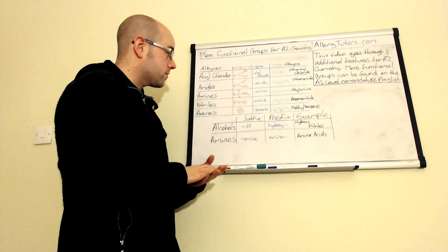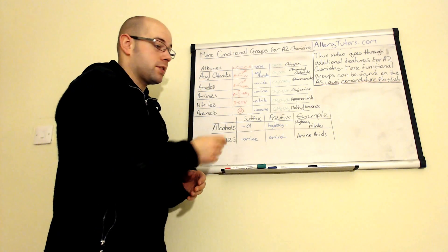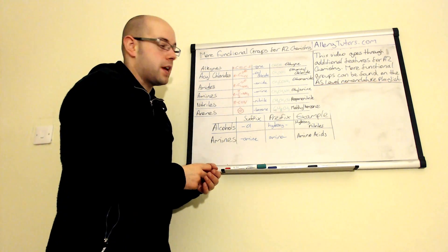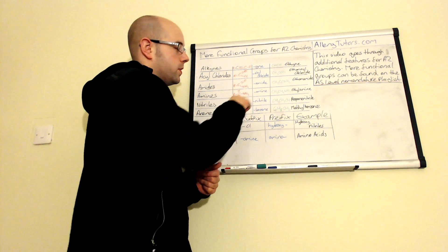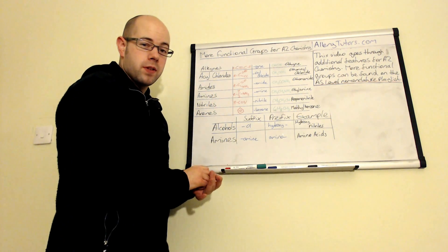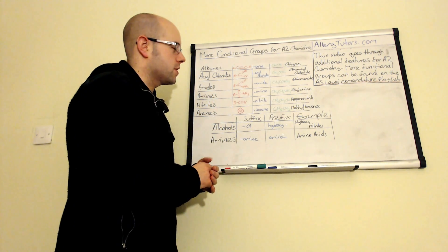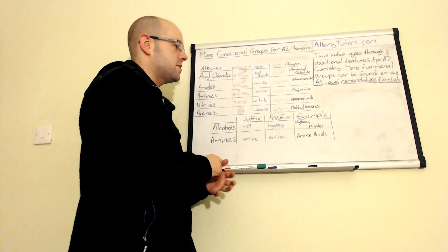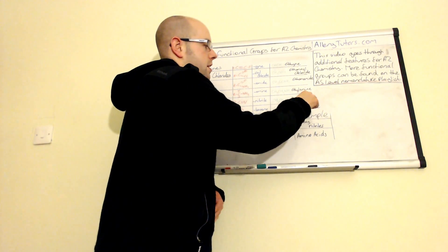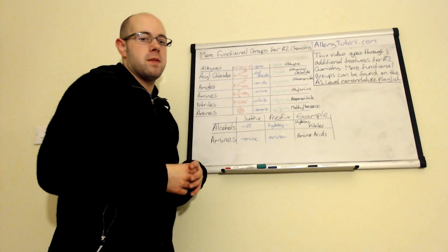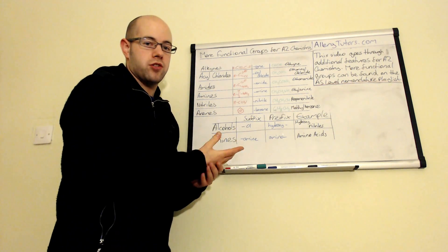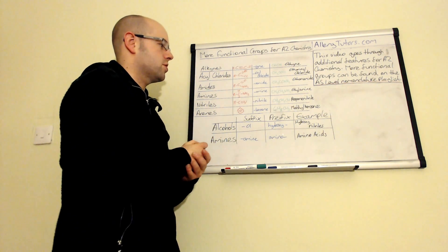The next group is nitriles. Nitriles have a carbon triple-bonded to nitrogen at the end of the chain, and these are particularly useful to know specifically for A2 chemistry. The ending is 'nitrile'. For example, you might have propanenitrile. They're easy to name — you just name the alkane and then add 'nitrile' on the end.